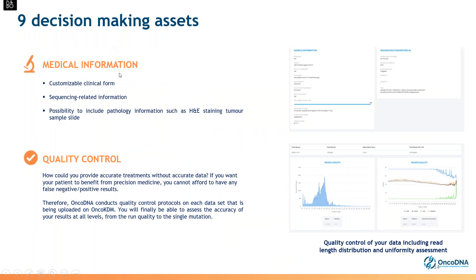First, you have the medical information section — a customizable clinical form where you can add all information related to the patient, such as whether they have metastasis, any related diseases, or current drugs and treatments. To the right you will see sequencing parameters including all sequencing-related information about the panels, the BED file used, and the type of sequencing technology. KDM also lets you include pathology information such as H&E stained tumor sample slides, helping the oncologist have all the information in one platform.